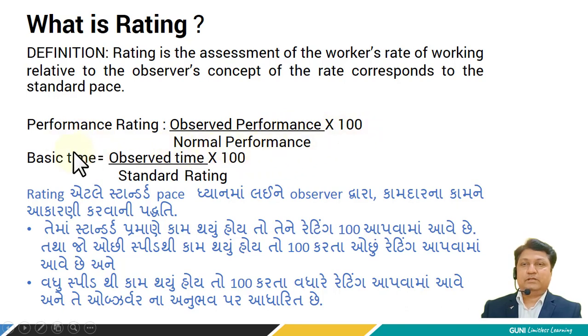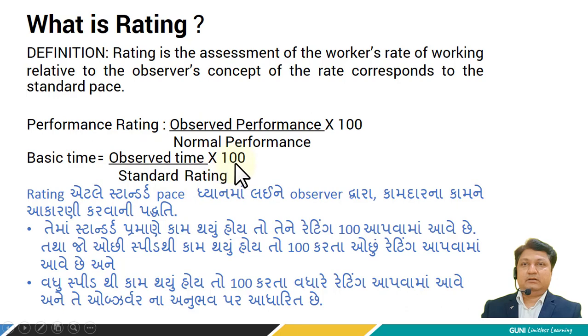From that we can calculate the basic time. The basic time is the ratio of observed time divided by standard rating, multiplied by 100, and the standard rating is 100.